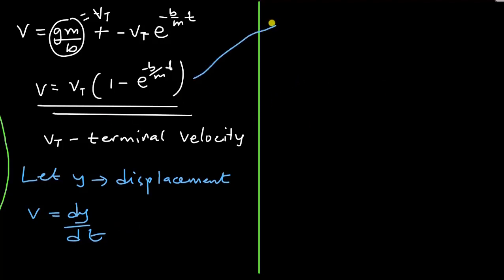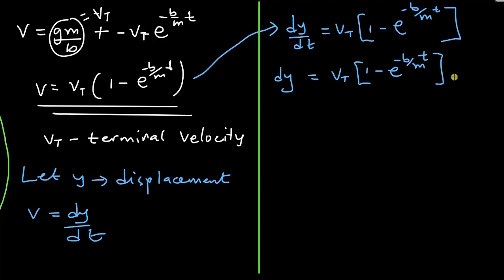So I can write this equation as dy/dt equals the terminal velocity times 1 minus exponent negative B over M times t. I can multiply dt on both sides so I have dy equals the terminal velocity Vt into 1 minus exponent negative B out of M times t with respect to t.